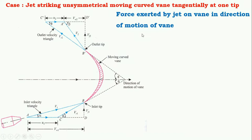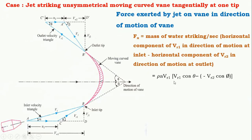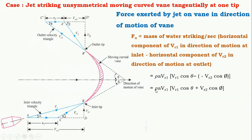To calculate the force exerted by jet on a vane in the direction of motion of the vane, we apply the impulse-momentum principle as discussed in earlier cases. Force Fx is equal to mass of water striking per second multiplied by the bracket: horizontal component of Vr1 in the direction of motion at inlet, minus the horizontal component of Vr2, that is relative velocity at outlet in the direction of motion at outlet. Putting in the values, mass flow rate gives rho A Vr1, resolving the relative velocities, minus Vr2 cos(phi), which has a negative sign as it is opposite in direction of jet. Simplifying, we get: rho A Vr1 into bracket Vr1 cos(theta) plus Vr2 cos(phi).